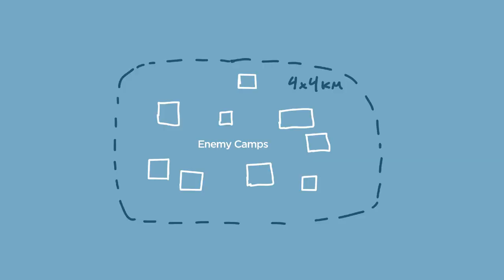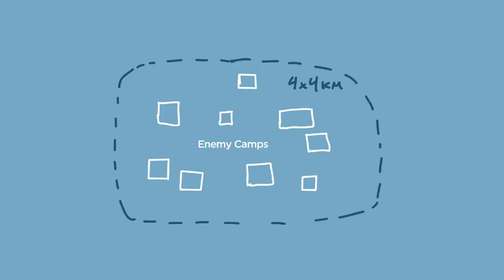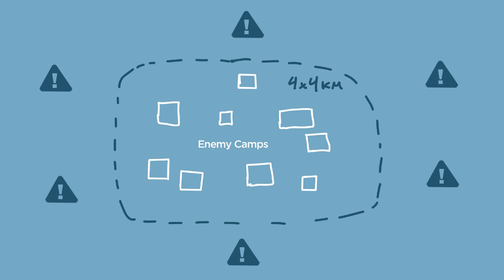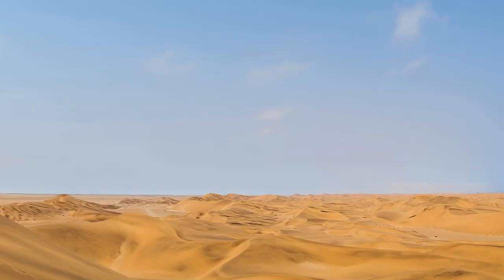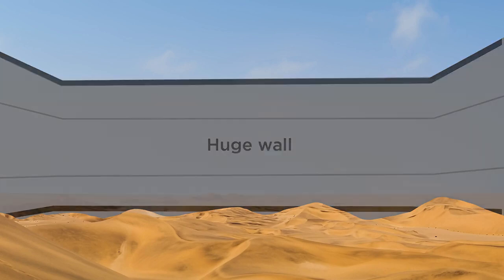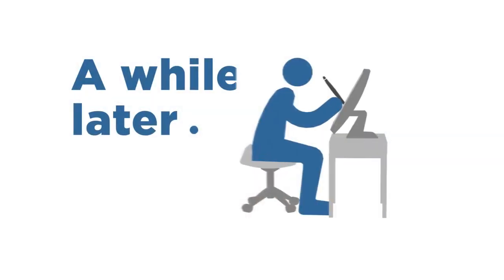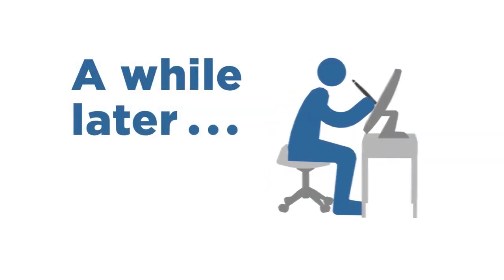In my case, I want to show that there is an inside and an outside, and to make the outside seem a bit dangerous — something I want to stay away from. But I have to do it in such a way that it doesn't block the view of this infinite horizon. After some sketching, here's what I came up with.